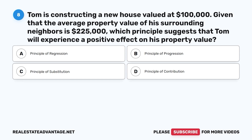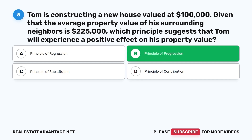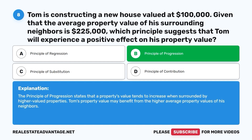Question 8. Tom is constructing a new house valued at $100,000. Given that the average property value of his surrounding neighbors is $225,000, which principle suggests that Tom will experience a positive effect on his property value? A. Principle of Regression. B. Principle of Progression. C. Principle of Substitution. D. Principle of Contribution. The correct answer is B. Principle of Progression. This principle states that a property's value tends to increase when surrounded by higher-valued properties.